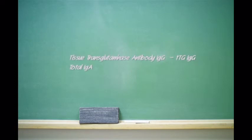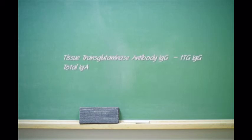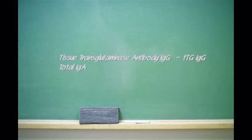then what should be sent out is an IgA, total IgA level, as well as a tissue transglutaminase IgG. If the child continues to have symptoms suggesting of celiac disease despite a normal screen,